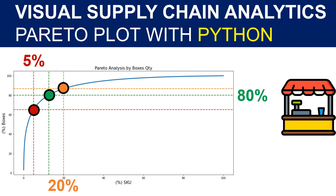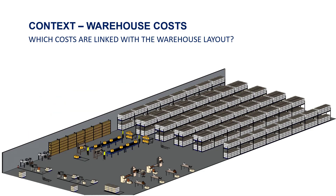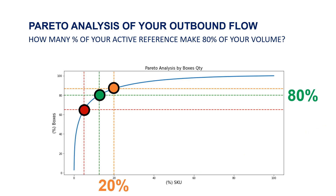Hey friends, let's look at how to plot one of the most important charts in supply chain management: the Pareto chart. The context here is how to use the Pareto principle to optimize your warehouse layout. Most of the time you'll have a minority of products bringing the majority of revenue or volumes — the Pareto effect, also called the 80/20 rule. This chart shows on the x-axis the percentage of SKUs and on the y-axis the percentage of volumes ordered in boxes, with vertical and horizontal lines at 20% and 80% respectively.